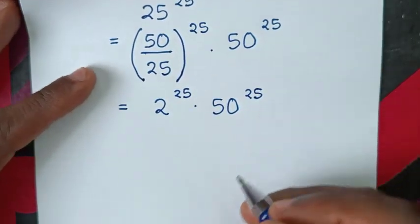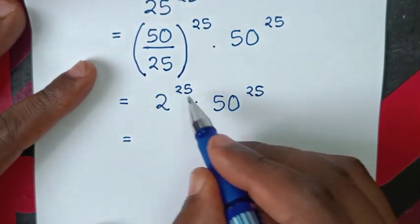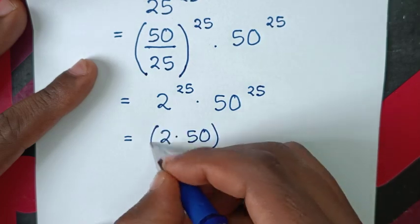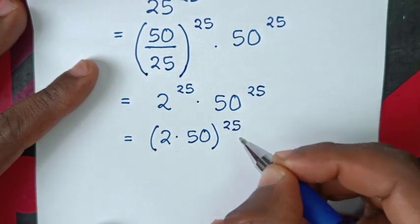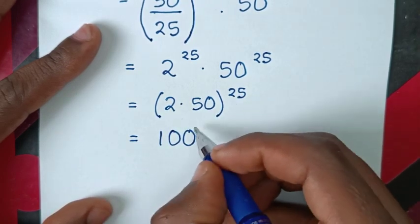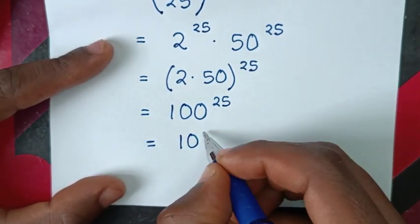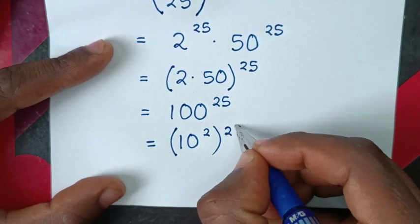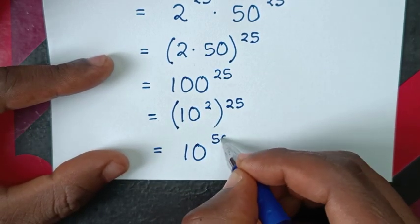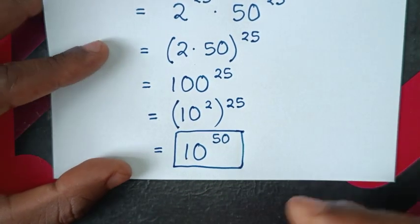Now applying the multiplication of exponents with different bases but the same power of 25, we multiply the bases: 2 times 50 equals 100. So we have 100^25. Since 100 equals 10 squared, we get (10^2)^25, which equals 10^50. So 10^50 is our final answer from Method 1.